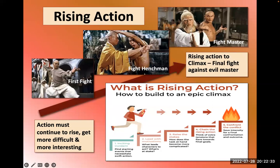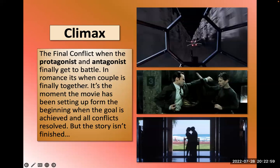Rising action: in a kung fu film, you don't fight the master until you beat all the henchmen along the way. Your first fight, then some henchmen, then eventually the master — the action must continue to rise, get more difficult and more interesting. Then we reach the climax, where the antagonist and protagonist finally battle. In Star Wars this is the final trench run, where it all comes together — a final battle or final reconciliation depending on the film.